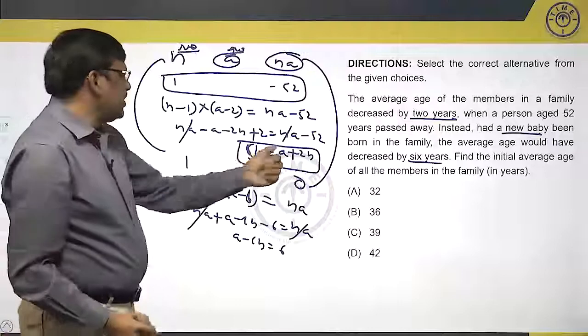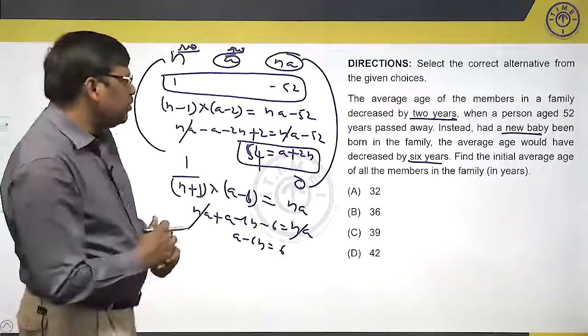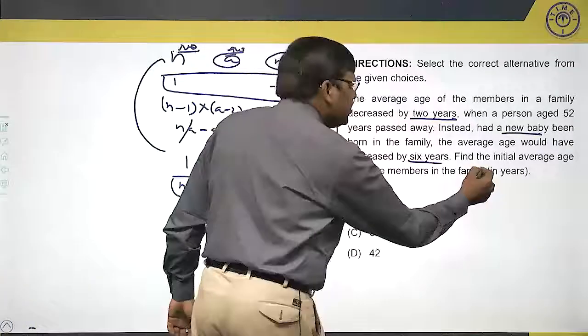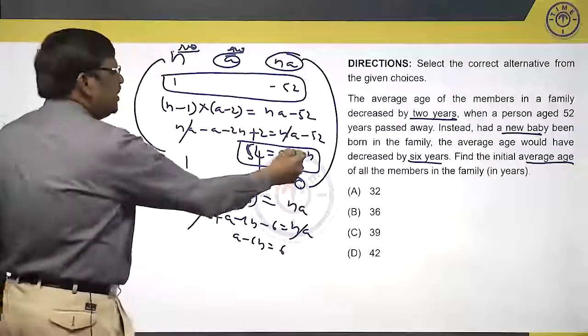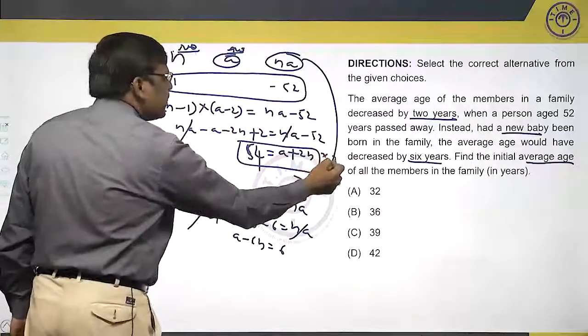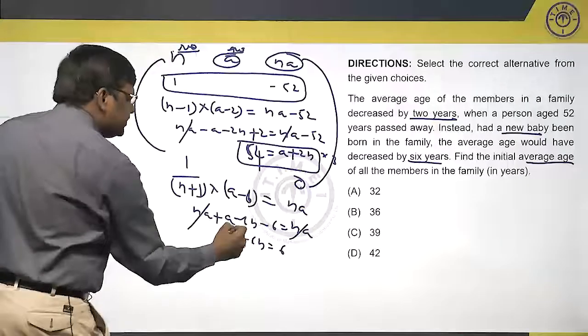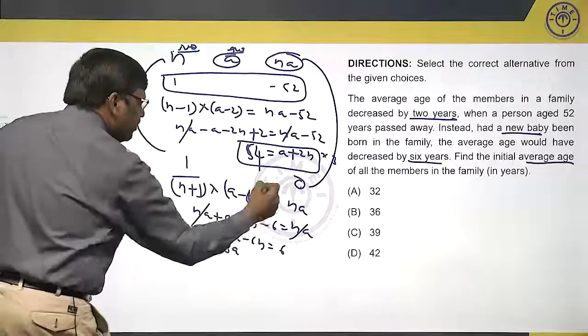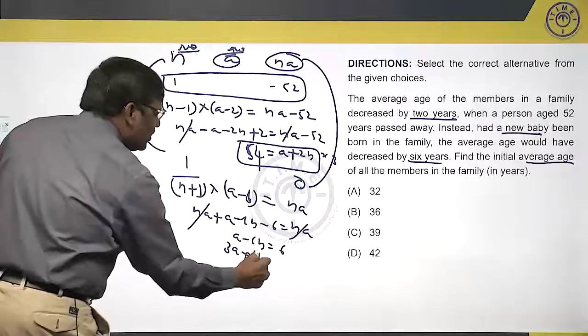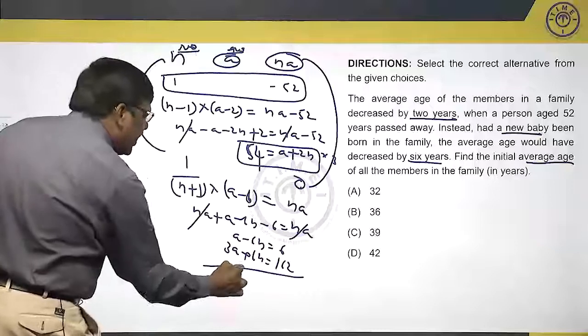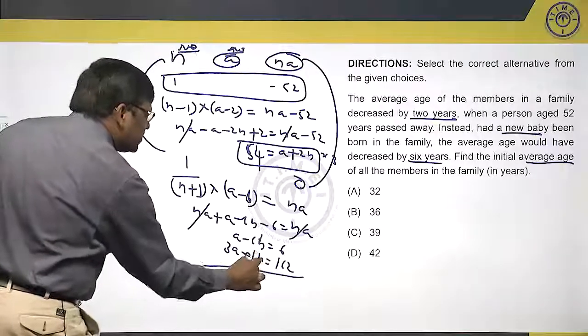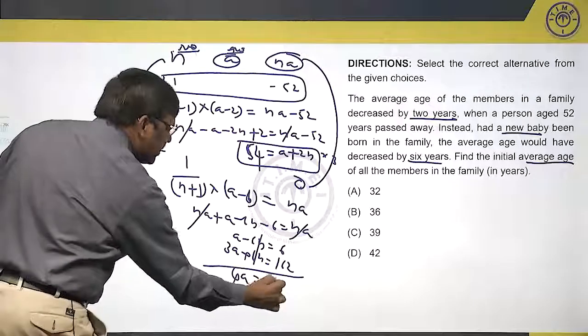I have a plus 2n is equal to 54. You need to know what? You need to know what is the initial average. You need a. So, try to cancel n. If I multiply this with 3 times, what happens? 3a plus 6n equals to 3 into 54, 162. So, if I add 4a, this gets cancelled equals to 168.